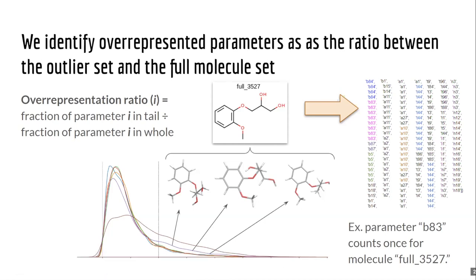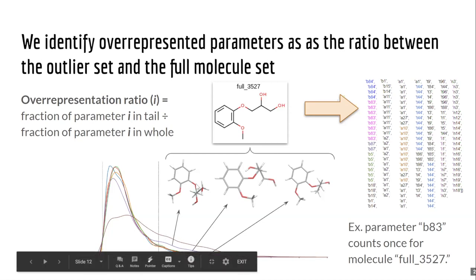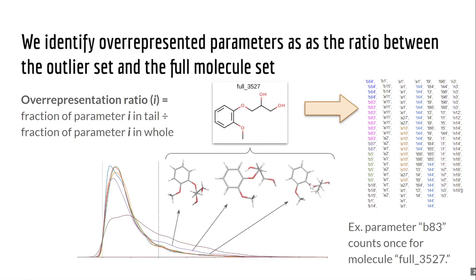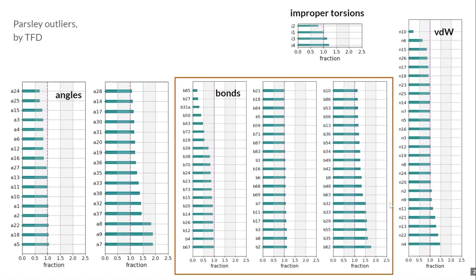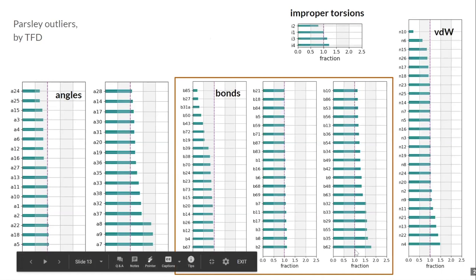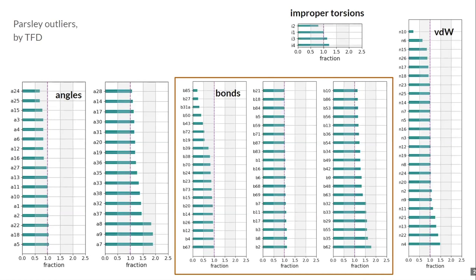We can take a look at specific parameters in the outlier regions to focus efforts on improving force fields going forward. The way we do that is by identifying structures in the tail region of the RMSD or TFD plot — here three conformers are represented there — and asking: what is the fraction of a given parameter in that tail region compared to its fraction in the whole set? Each conformer is considered separately but each molecule only counts once regardless of how many conformers appear. Parameters with a ratio above one are overrepresented in the tails of the RMSD or TFD distribution and are candidates for focus.